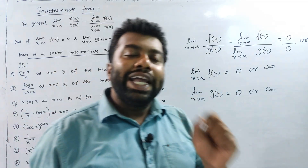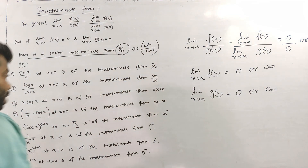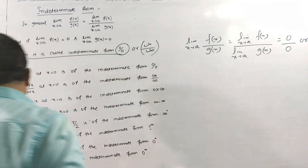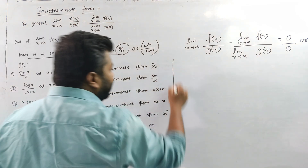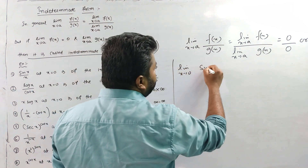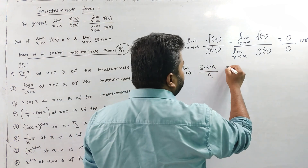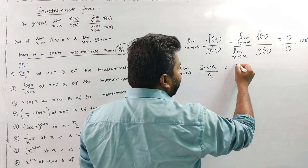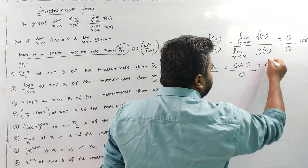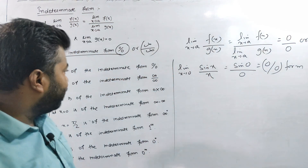So what is the indeterminate form? Let's see a very simple example. First question: limit x tends to 0 of sin(x) by x. When we put x = 0, we get sin(0) by 0, which gives us 0 by 0. So this is the 0/0 form, which is the indeterminate form.